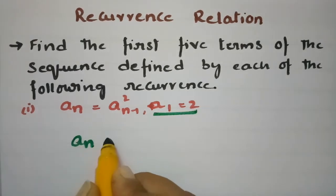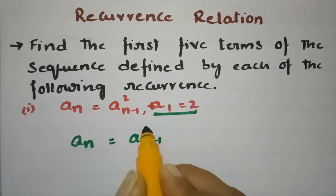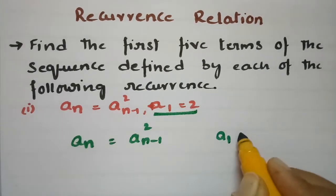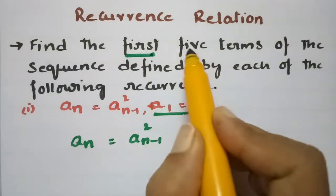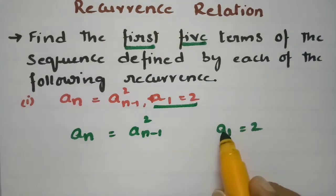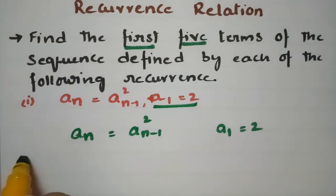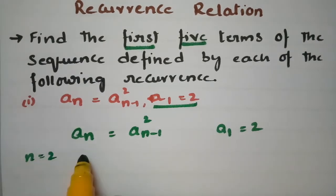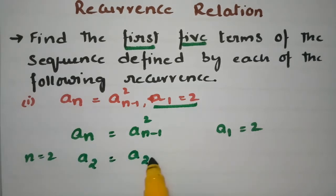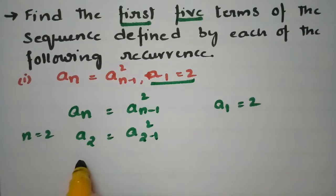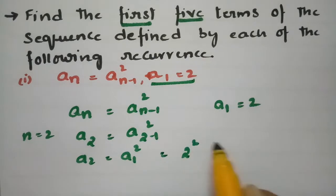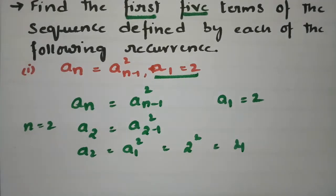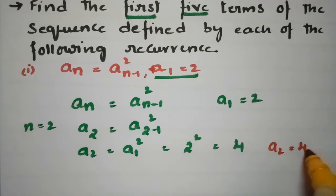We have a_n = (a_{n-1})² with initial condition a_1 = 2, and we need the first five terms. Since a_1 is known, we go to a_2 by putting n = 2. So a_2 = (a_1)² = 2² = 4. We got our a_2 value equal to 4.